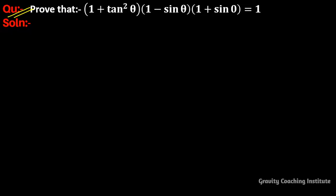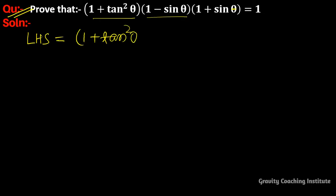Question: prove that (1 + tan²θ)(1 - sinθ)(1 + sinθ) = 1. So here, LHS is equal to (1 + tan²θ) into (1 - sinθ) into (1 + sinθ).